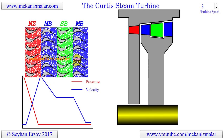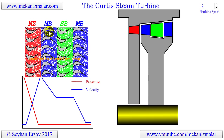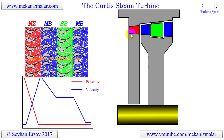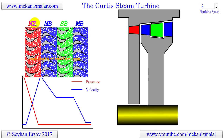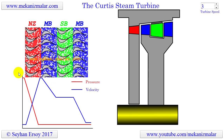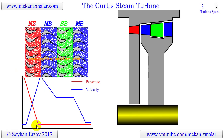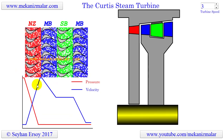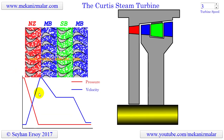The first stage, shown in red and indicated by NZ, is where the nozzles are located. Here the steam's potential energy is converted to kinetic energy. As you can see in the plot, this stage corresponds to a substantial pressure drop, which in turn increases the velocity of the steam proportionally.